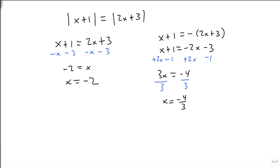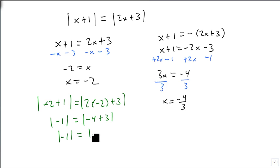And if we plug these in, the first one's real easy. Minus 2 plus 1 equals 2 times minus 2 plus 3. And remember the absolute value. So minus 2 plus 1 is minus 1. Is that the same as minus 4 plus 3? Well, the absolute value of minus 1 is 1, and the absolute value of minus 1 is 1. So sure enough, 1 equals 1.